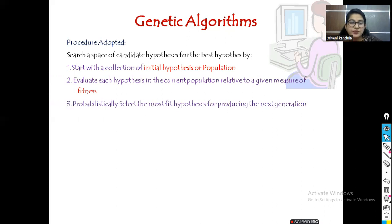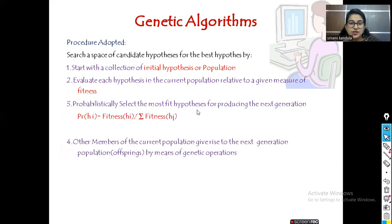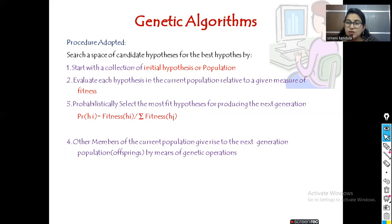After fitness evaluation, we probabilistically select the most fit hypotheses for producing the next generation using the fitness probability formula. Whichever hypothesis gets the best value is taken as the most fit and added to the next generation. Other members of the current population also give rise to the next generation through genetic operations performed on the remaining hypotheses.